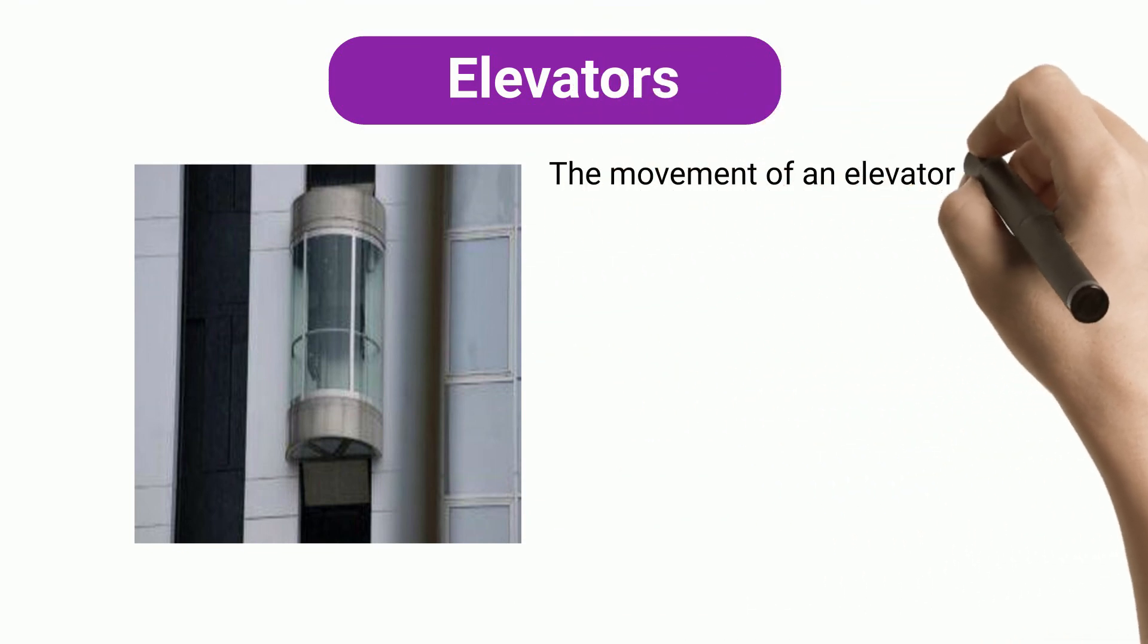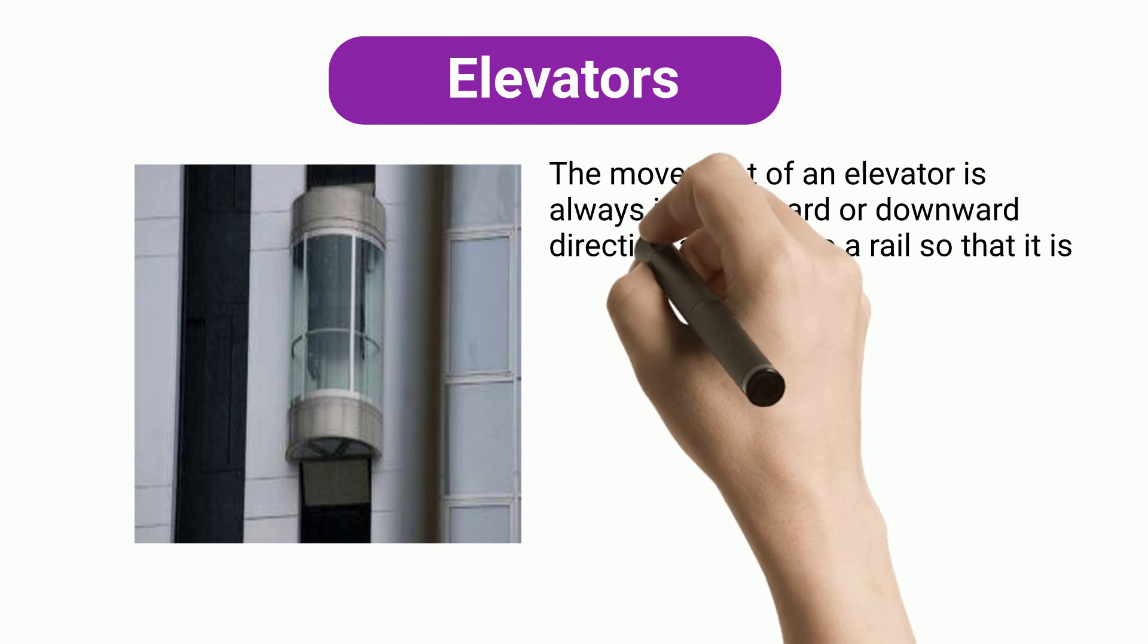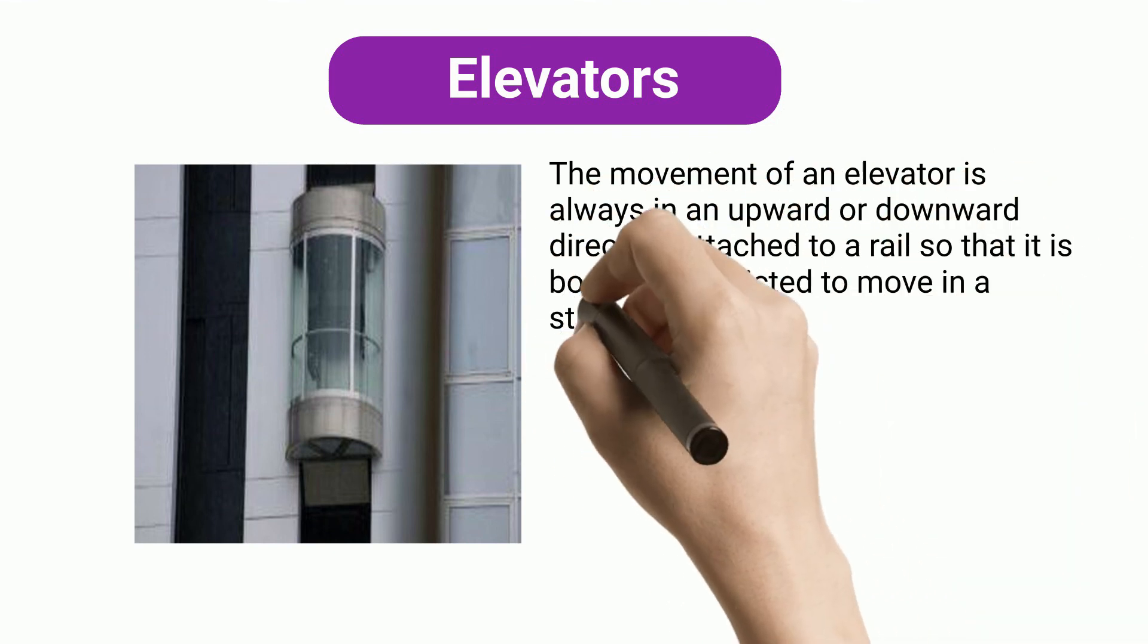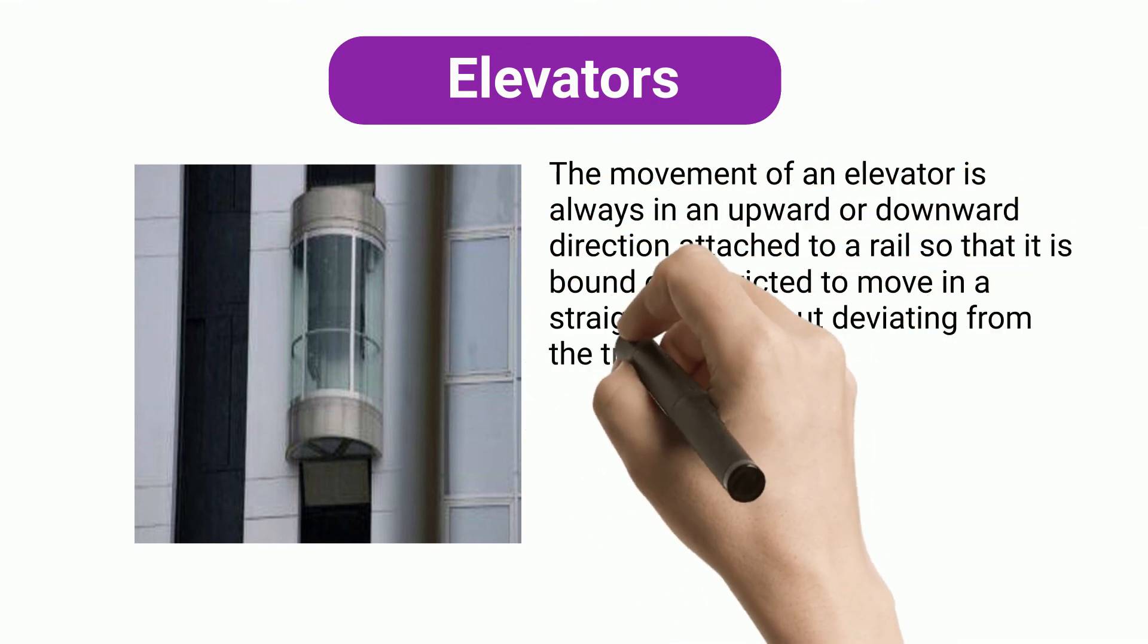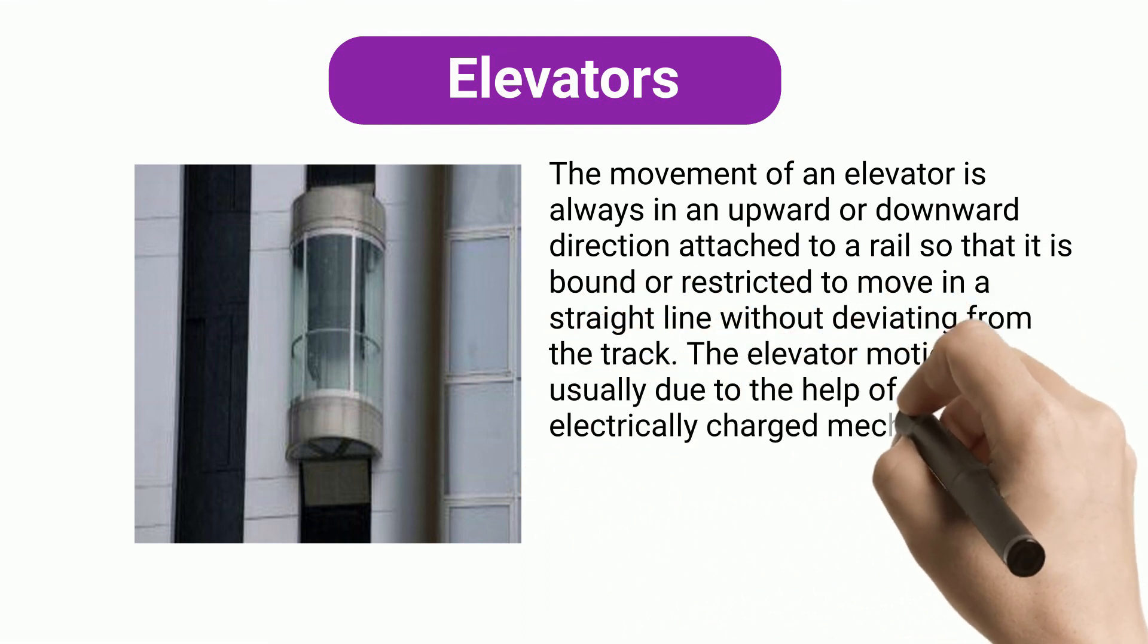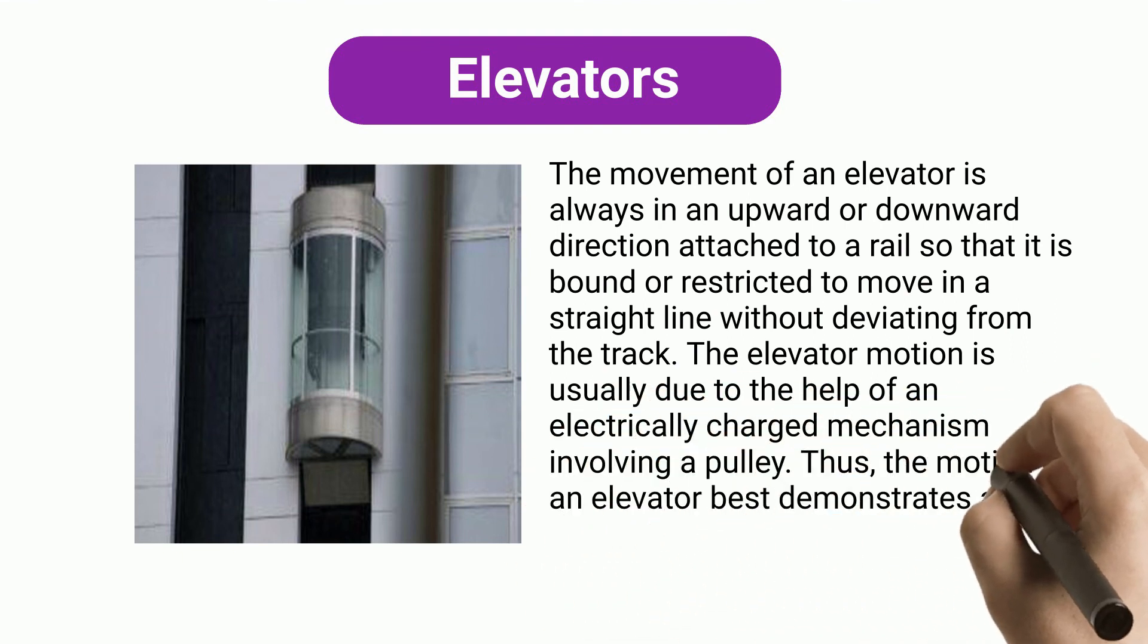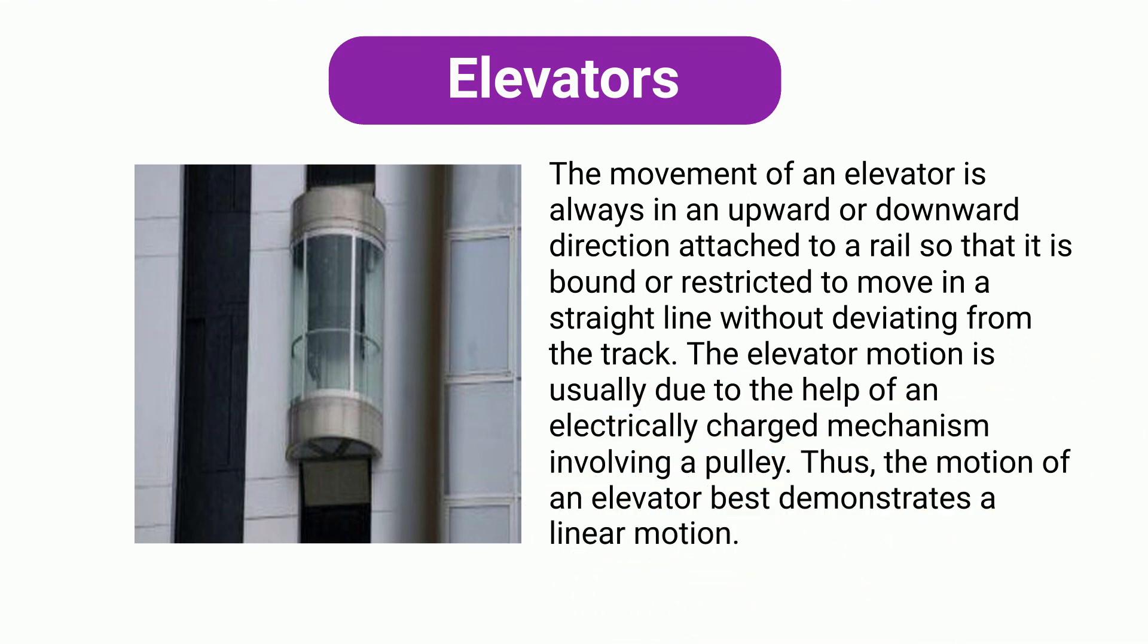Elevators: the movement of an elevator is always in an upward or downward direction, attached to a rail so that it is bound or restricted to move in a straight line without deviating from the track. The elevator motion is usually due to the help of an electrically charged mechanism involving a pulley. Thus, the motion of an elevator best demonstrates a linear motion.